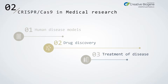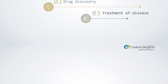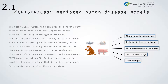In medical research, CRISPR-Cas9 technology is widely used in the construction of human disease models, drug discovery, and disease treatment research. The CRISPR-Cas9 system has been used to generate disease-based models for many important human diseases, including neurodegenerative diseases, cardiovascular diseases, and cancers, as well as other Mendelian or complex genetic human diseases, enabling study of molecular mechanisms of pathogenesis, drug screening, and gene therapy. CRISPR-Cas9 can also efficiently target genes in somatic tissues for studying age-related disease physiology.